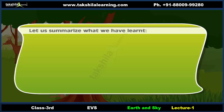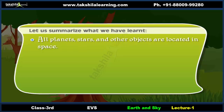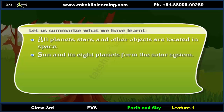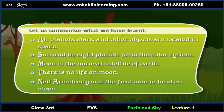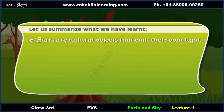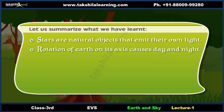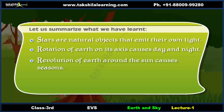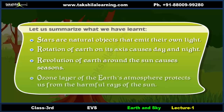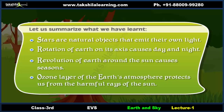Let us summarize what we have learned. All planets, stars, and other objects are located in space. The Sun and its eight planets form the solar system. The Moon is the natural satellite of Earth, and there is no life on the Moon. Neil Armstrong was the first man to land on the Moon. Stars are natural objects that emit their own light. Rotation of Earth on its axis causes day and night. Revolution of Earth around the Sun causes seasons. The ozone layer of Earth's atmosphere protects us from the harmful rays of the Sun.